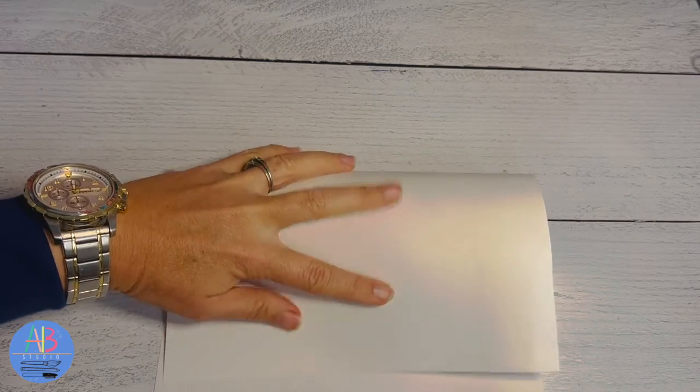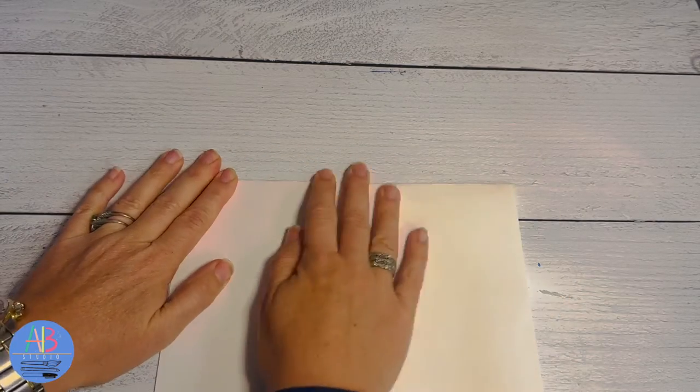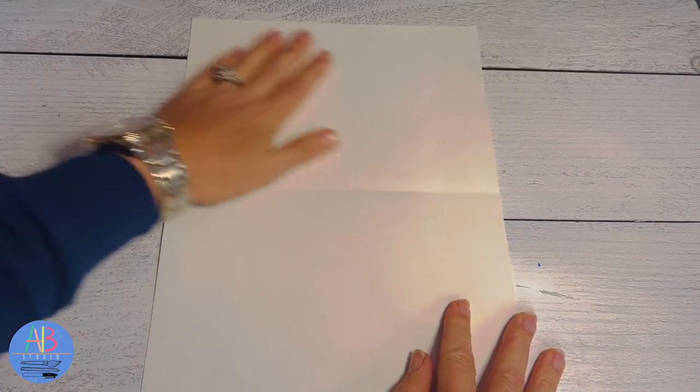So before we start we're going to fold it so we have the center. So you're going to take your short top and fold it, crease it to the short bottom so we know where the center is. It just helps us out as we are drawing.